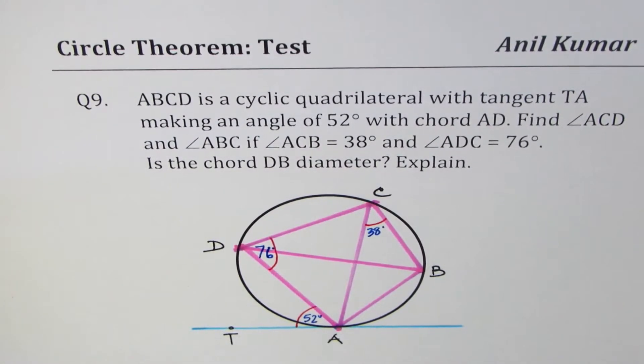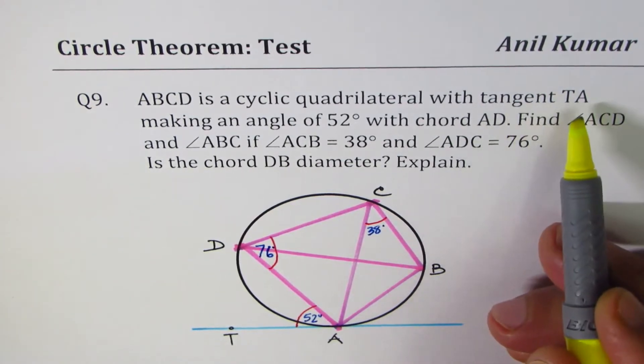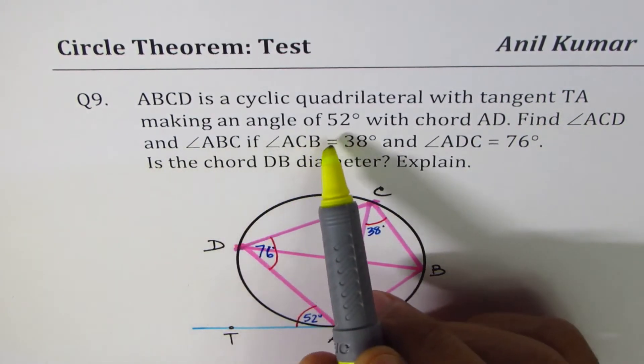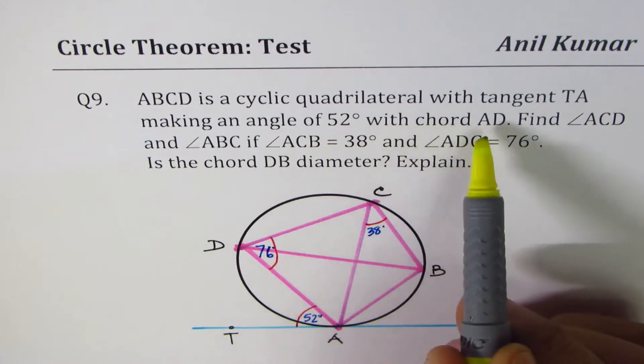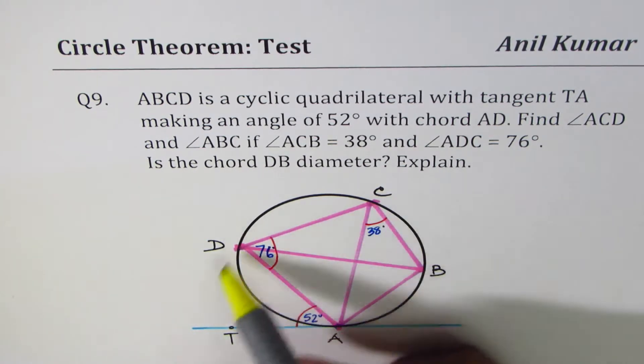I am Anil Kumar sharing with you some interesting questions based on circle theorem. These are questions which you could expect in a test. Question number nine: ABCD is a cyclic quadrilateral with tangent TA making an angle of 52 degrees with the chord AD. So ABCD is a cyclic quadrilateral, meaning all the vertices are on the circle circumference.